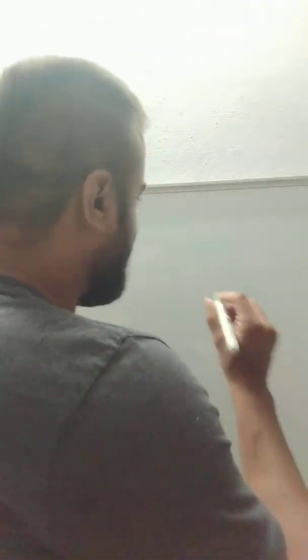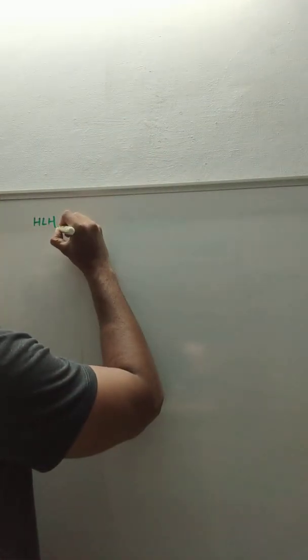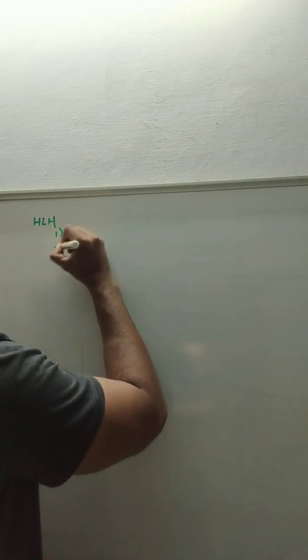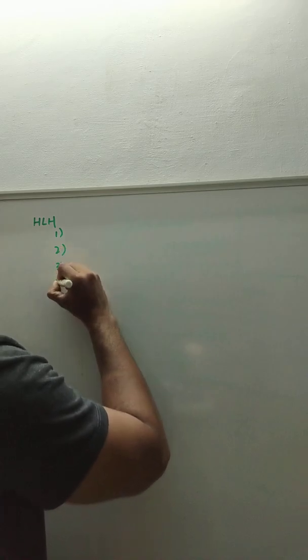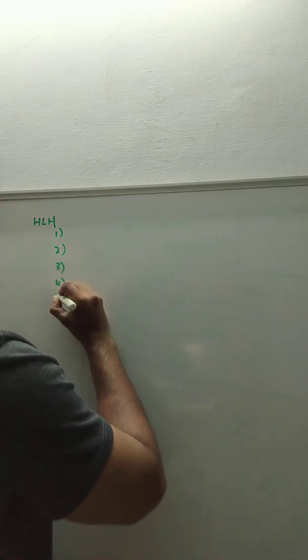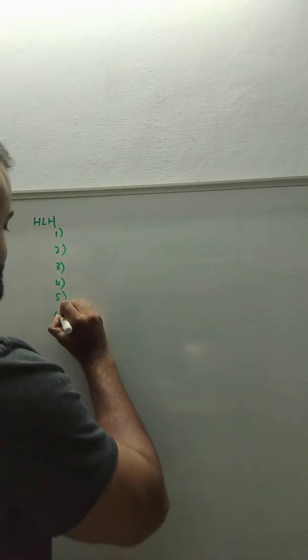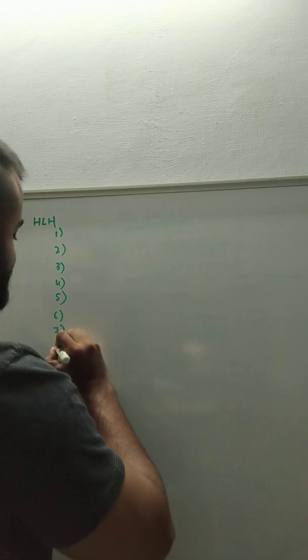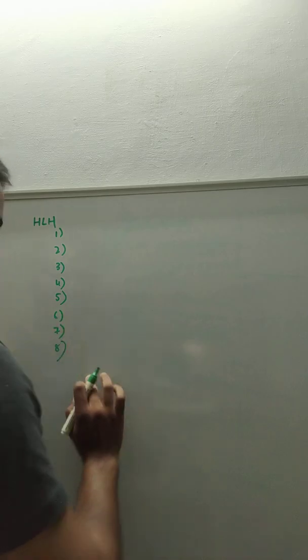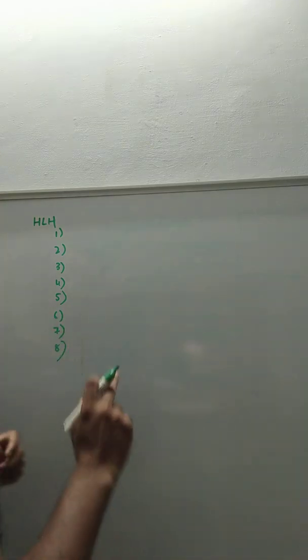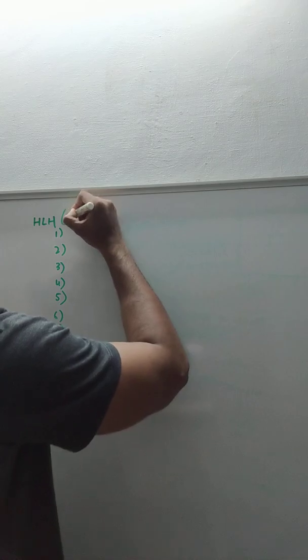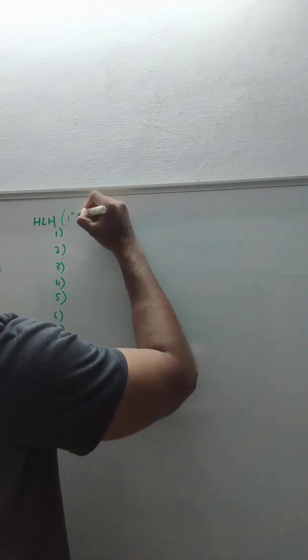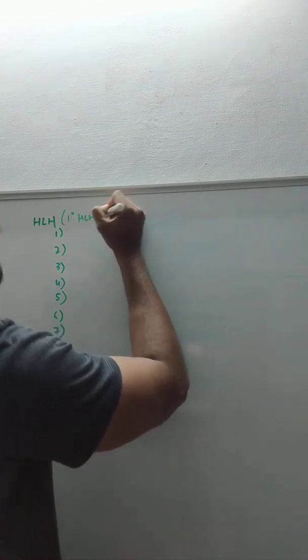For the diagnosis of primary HLH, you need any five of these eight criteria. If you have five criteria, you can label it as HLH. Again, we are talking only about primary HLH and not secondary HLH.